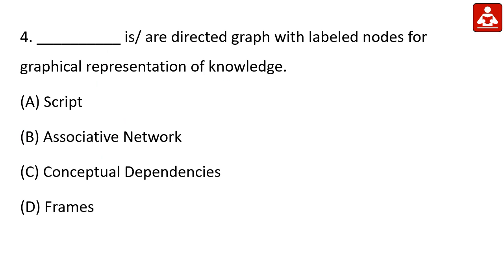A directed graph with labelled nodes for graphical representation of knowledge — this is a type of knowledge representation. Option B, Associative Network, is the right answer.